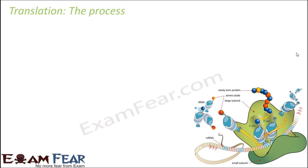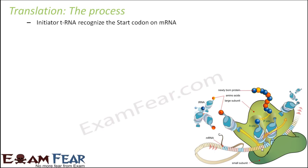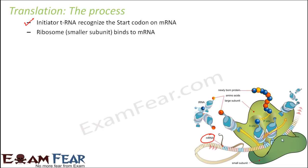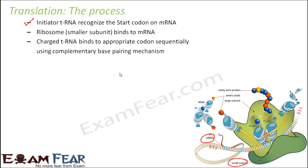Let us look at the entire process of translation as a whole. In translation, the initiator tRNA recognizes the start codon on the mRNA. The tRNA comes near the mRNA sequence and as soon as it recognizes the start codon — which codes for methionine — translation begins. The smaller ribosomal subunit binds to the mRNA, while the larger unit is where peptide bond formation takes place.